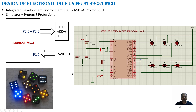In an electronic format we would like to have the die with 6 LEDs. So whenever I press a switch, a random number will be generated between 1 to 6 and that will be indicated in the LED output. Thereby a random number will be shown on an electronic die, and the number will be between 1 to 6.